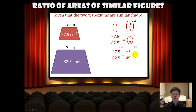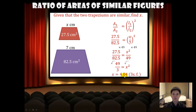Multiplying 49 on both sides, we will have 49 over 3 equals x squared. To find x, we square root both sides, giving x equals 4.04 rounded to 3 significant figures. We ignore the negative value because length cannot be negative.